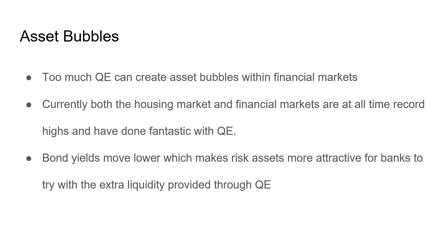There are some risks of QE, and there are a lot of reasons why people don't like it. Asset bubbles are probably the biggest one — too much QE can create asset bubbles within financial markets, like the housing market and stock market. Currently, both are at all-time record highs in terms of housing sales and equity prices, and they've done fantastic in the last year with QE. Bond yields move lower to make risk assets more attractive for banks, giving them extra liquidity through the QE process to move money back into the economy.